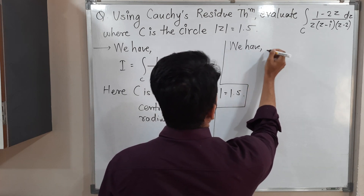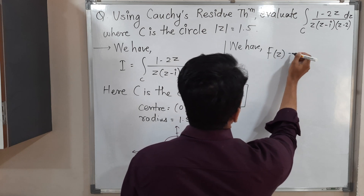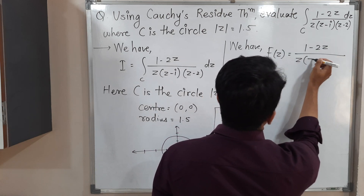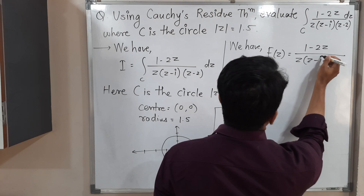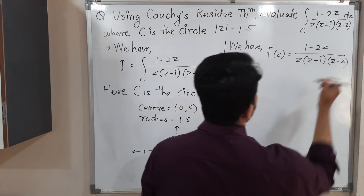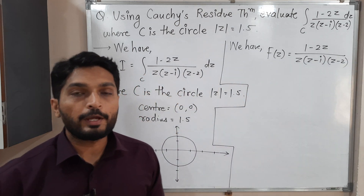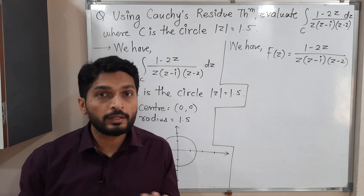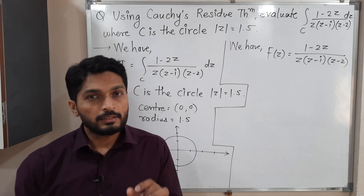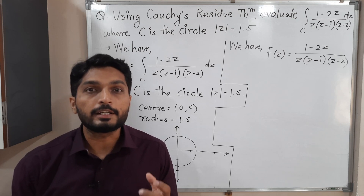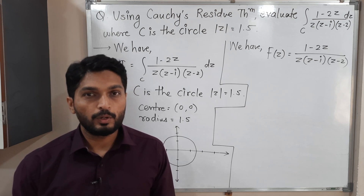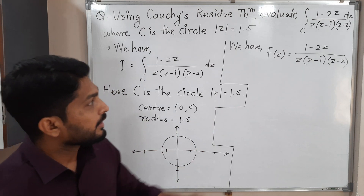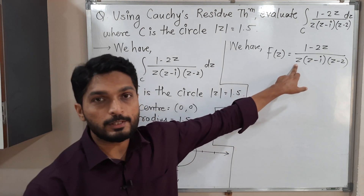Our f(z) is (1 minus 2z) upon z times (z minus i) times (z minus 2). First we have to find singular points — the points where the function is not analytic. These are generally the points which make the denominator zero. At which points will the denominator be zero?